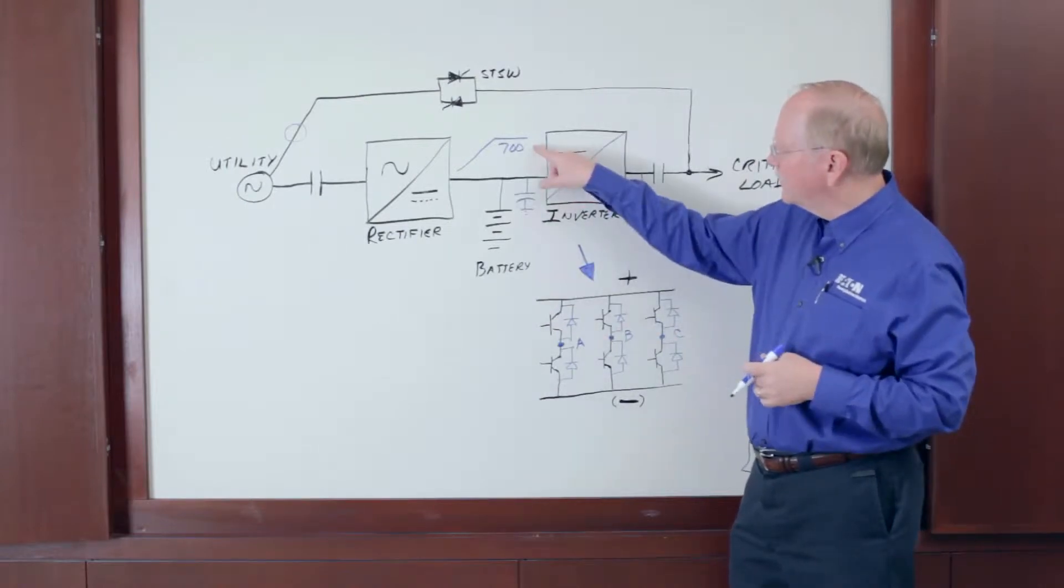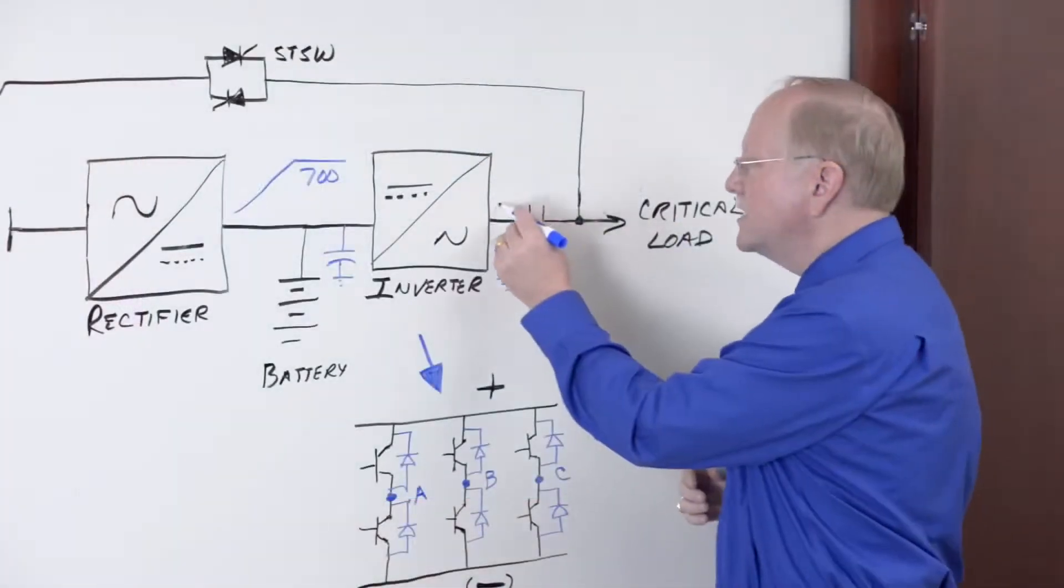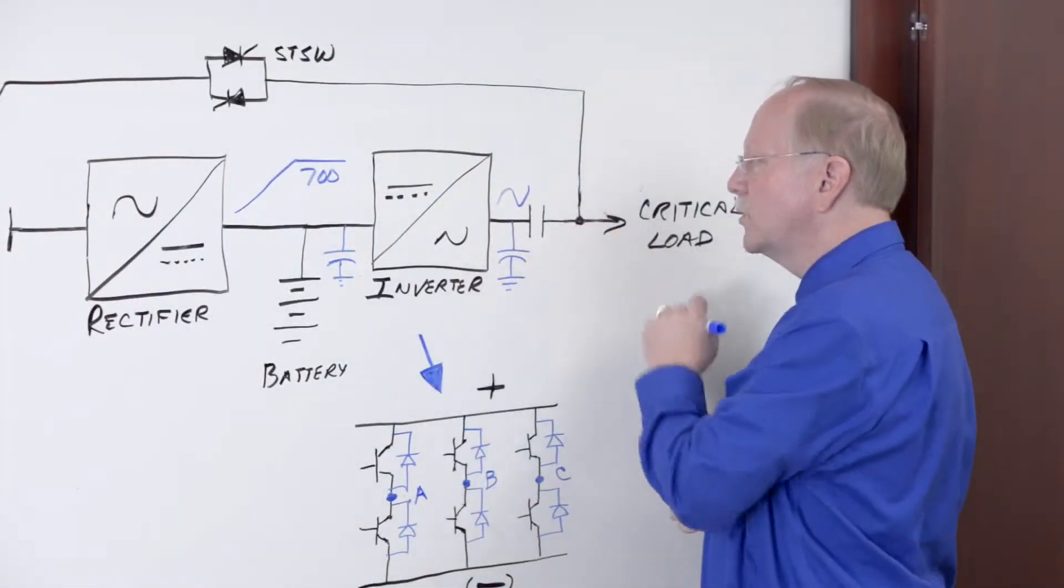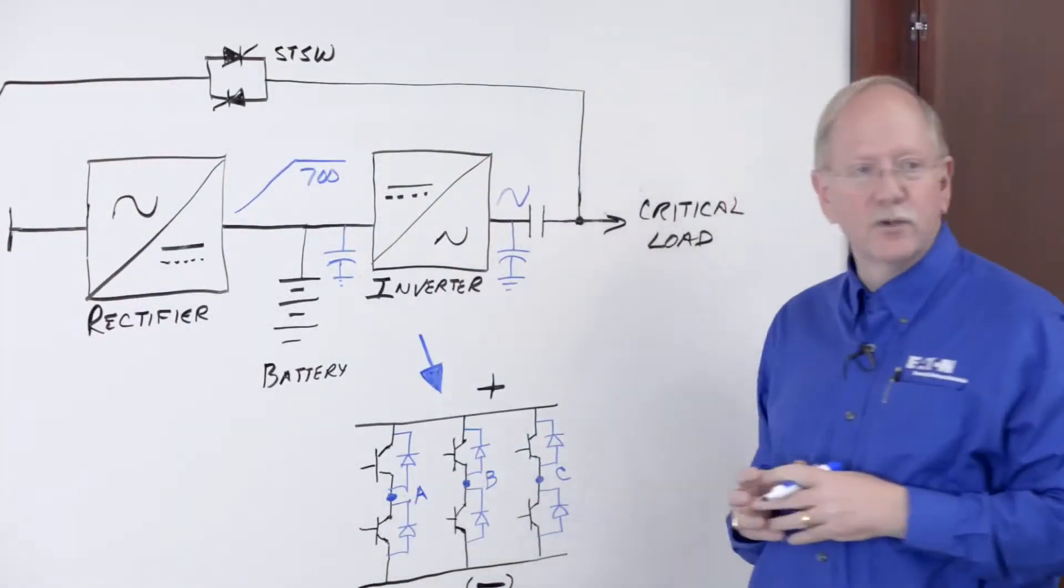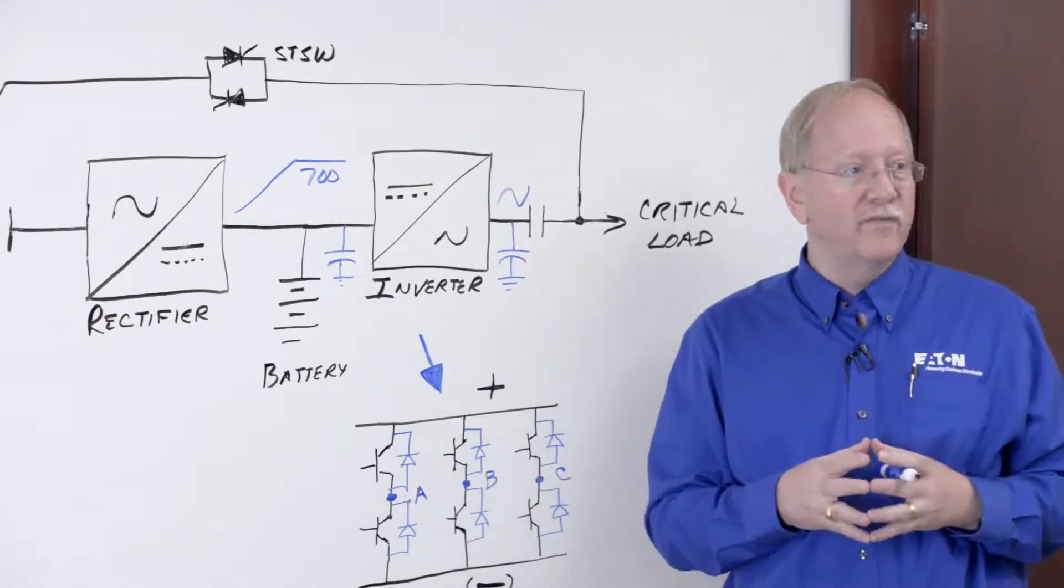Then once the 700 volts appears, the inverter can start, take DC, make AC, but this AC output of the inverter has to be in sync with the critical bus before we can close the output contactor. That's another delay of 10 to 15 seconds to wait for sync.